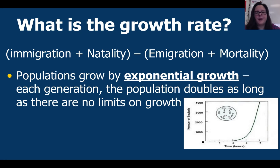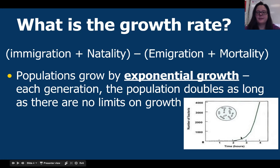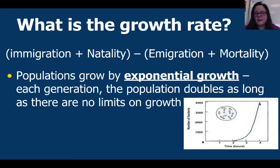Populations grow in different ways. One way is exponential growth, where each generation the population doubles as long as there are no limits on growth. If you look at this chart, it shows bacteria growth over time, over hours. You can see that this population is growing exponentially — that curve is going almost straight up diagonally. It's going to keep growing as long as there aren't any limits to stop their growth.